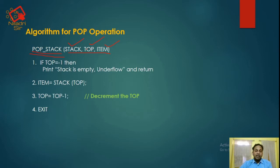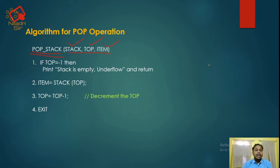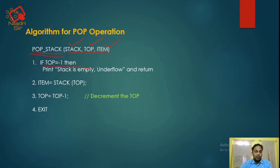Stack is the list, top is the topmost element of the stack, and item is which element we want to delete. In our previous lecture, we have seen that when the stack is empty, the value of top is minus 1. When the value of top is minus 1, there is no element in the stack, so the delete operation cannot be performed. If top is minus 1, then we will print 'stack is empty' or underflow condition and we will return. No POP operation can be performed.